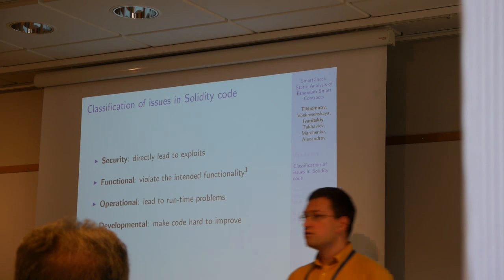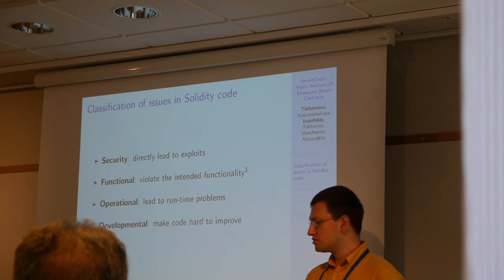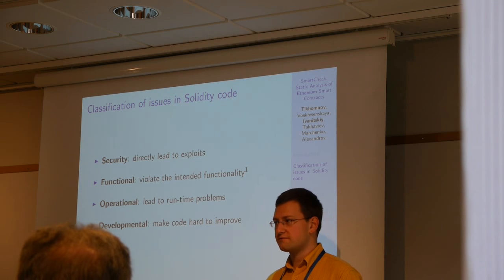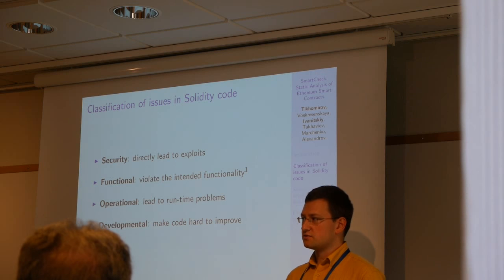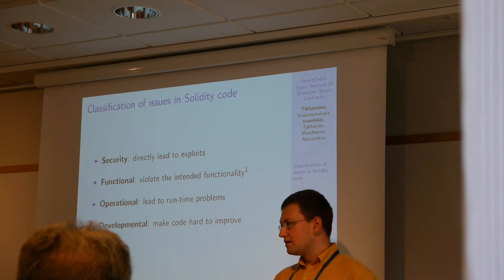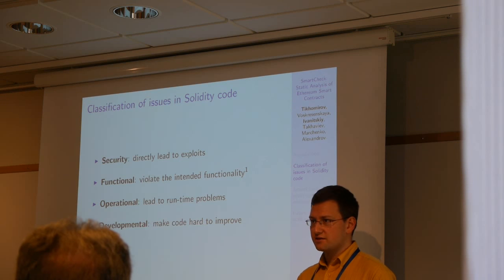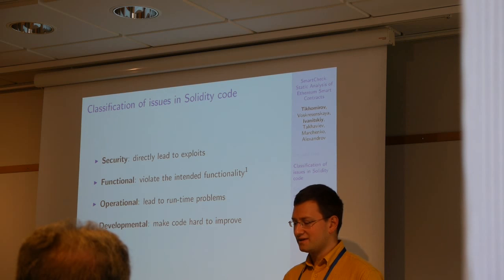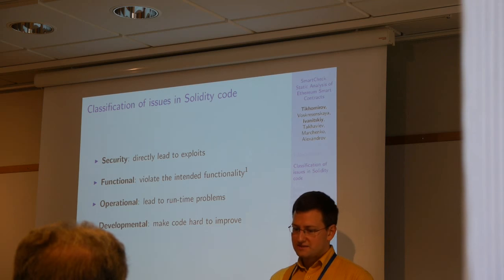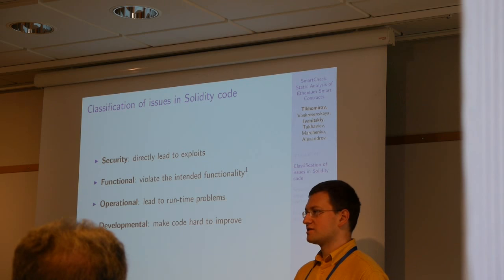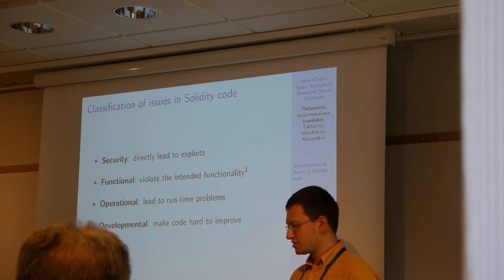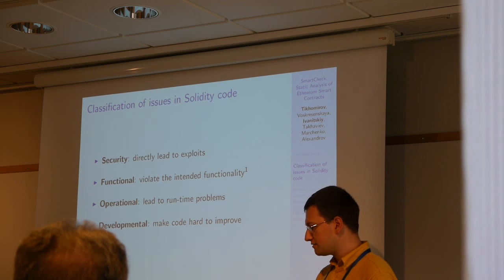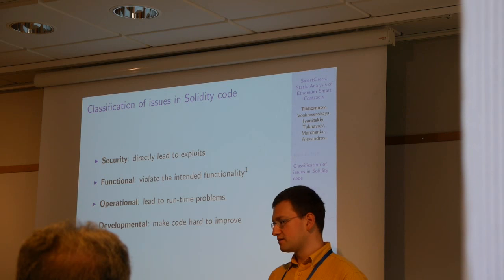This is our classification of issues. We divide the issues into four categories. The first and most crucial is security vulnerabilities — issues that can directly lead to exploits and loss of funds, which developers should fix immediately. Functional issues may violate the intended functionality of the smart contract, though developers rarely provide an independent specification of their intent, so in many cases we can only guess. Operational issues may lead to problems at runtime or performance issues. Developmental issues prevent or make development of the code harder.